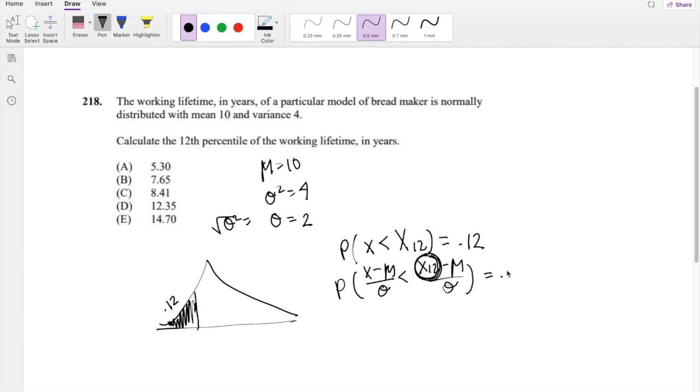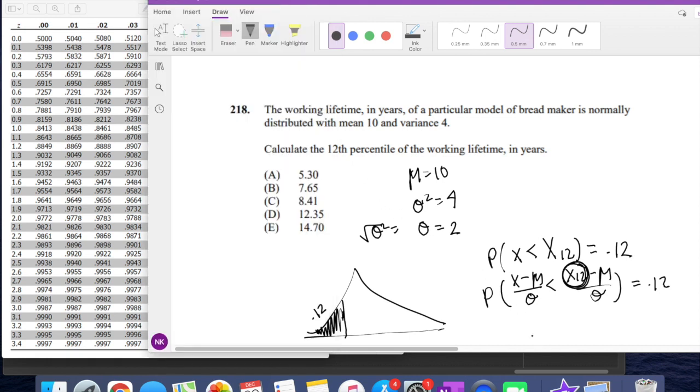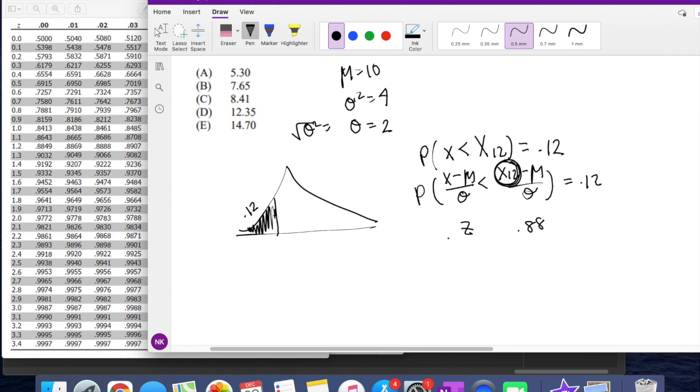So probability of x minus is equal to 0.12. So we have to pull up our z-table. So 0.12 is our percentage. But because we have the positive side, we have to do 1 minus 0.12 to find the z-value that corresponds to 0.88. So z-value that corresponds to 0.88 is like 1.17. So when z is less than this value minus mean, which is 10, over standard deviation, which is 2, this is equal to 1.17.